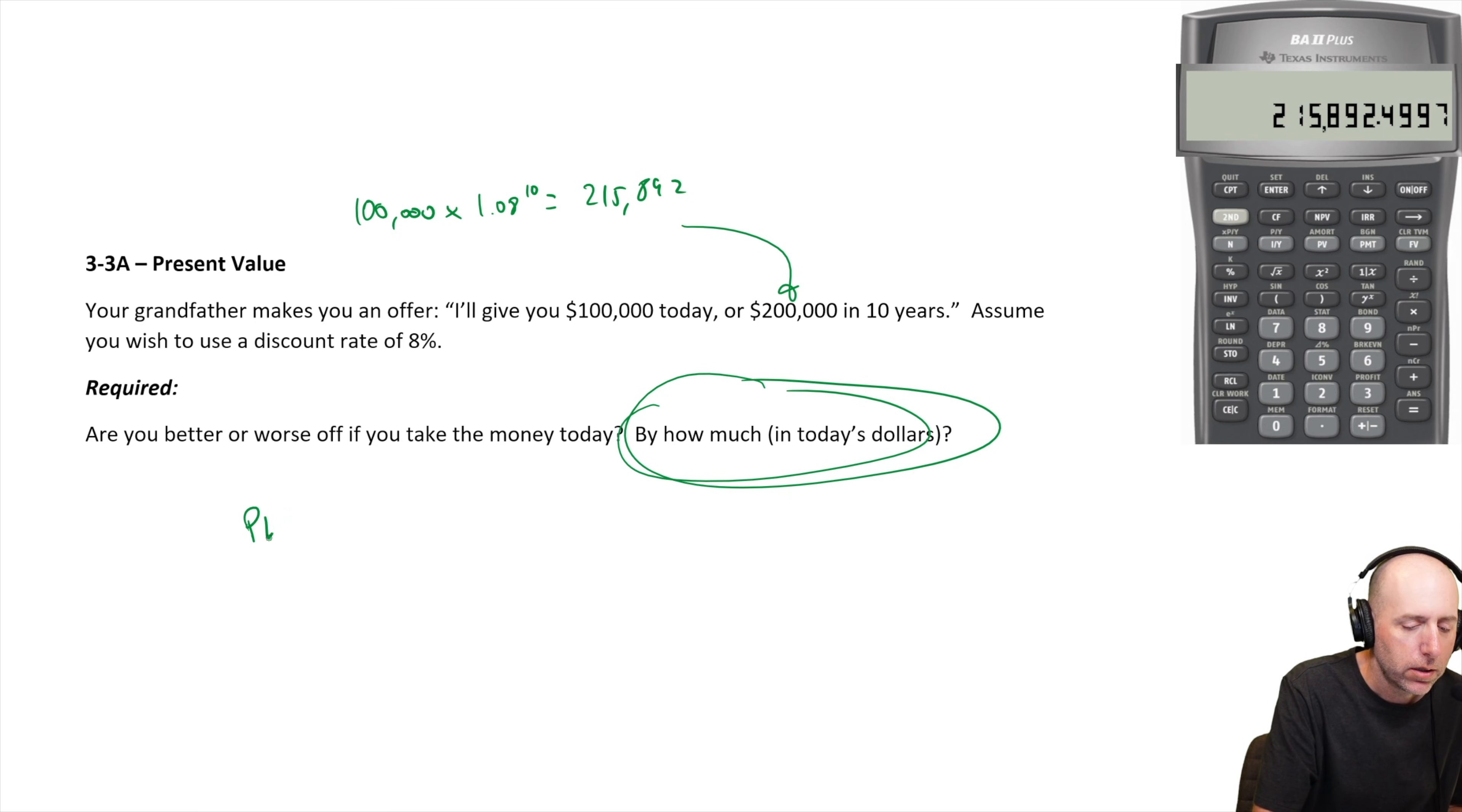Well, the present value times 1.08 to the 10 equals the future value, right? In this scenario, so the present value times 1.08 to the 10 equals $200,000.